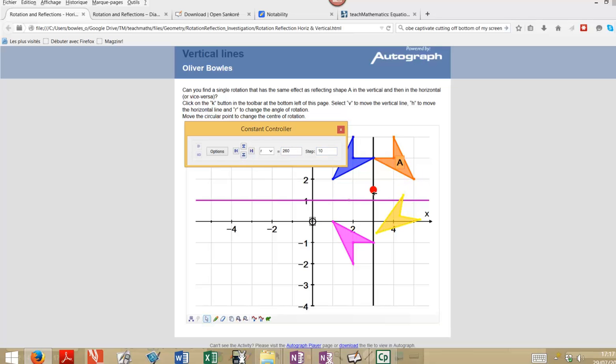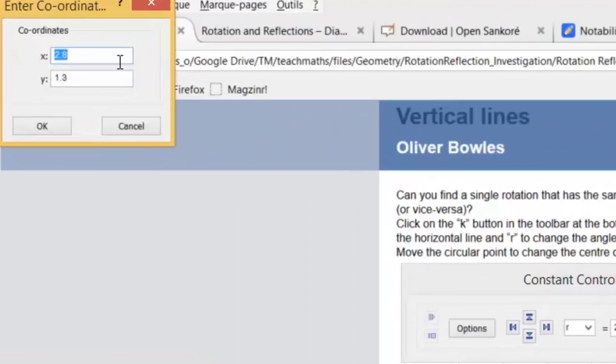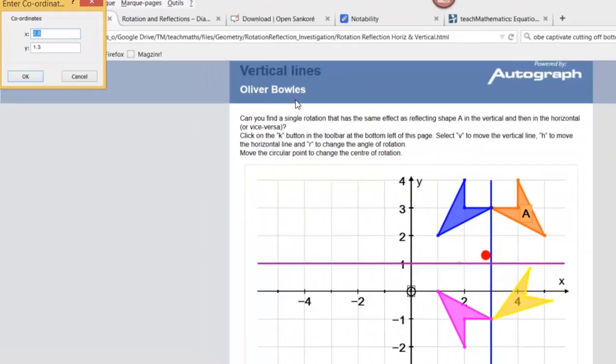You can rotate that round and move the centre of rotation as we discussed earlier, and double-click on the centre of rotation so you can see its centre of rotation coordinates.